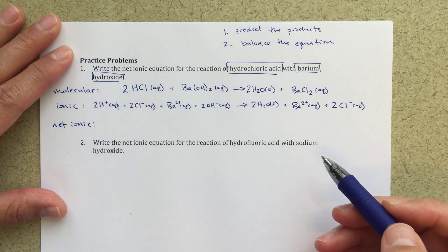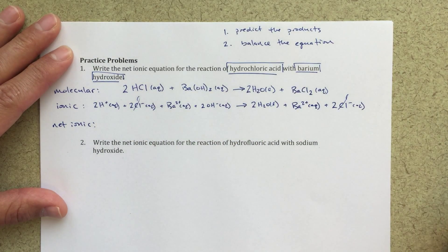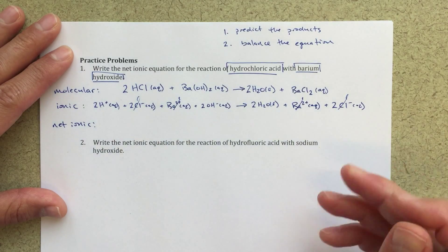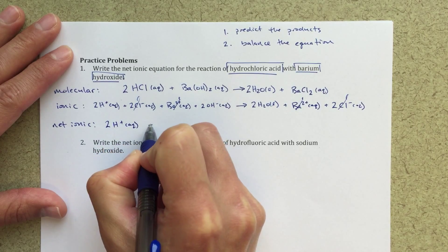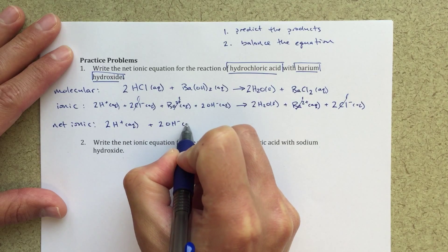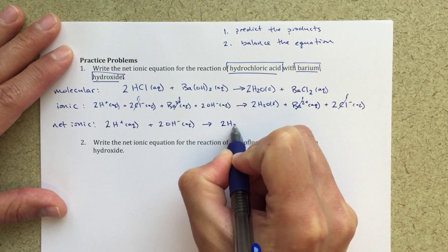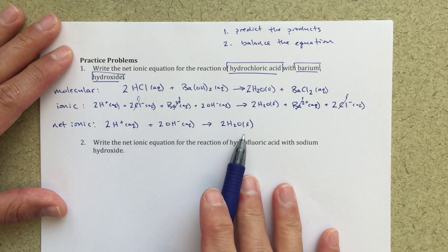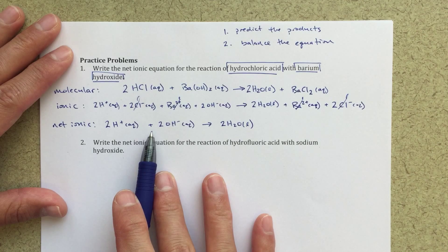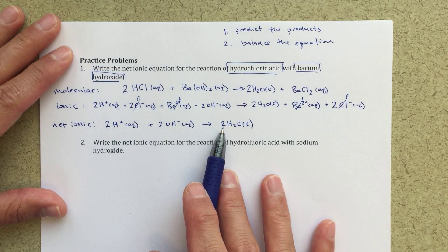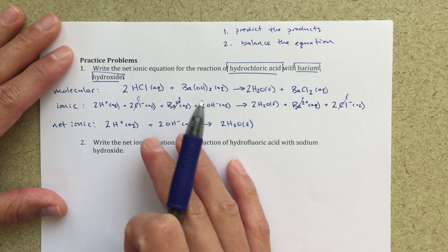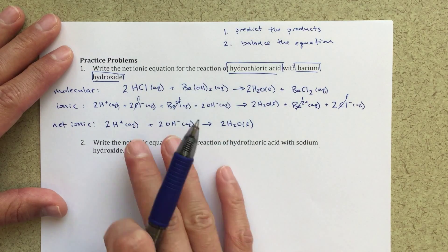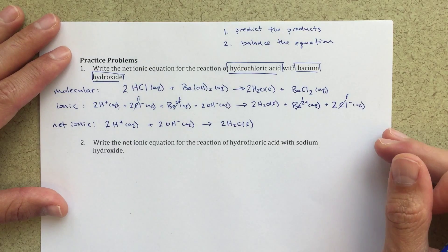For my net ionic, that's gonna be where I cancel out the spectator ions. I see chlorines on both sides, I see barium on both sides, and that's all my spectator ions - they're just watching the reaction occur. For my net ionic equation, we're going to end up with two H+ plus two OH- reacts to form two H2O liquid. A lot of times we'll simplify this even further. Since we've got two, two, two as our coefficients, we can rewrite this as one, one, one. If you left it this way, I think that's A-okay.